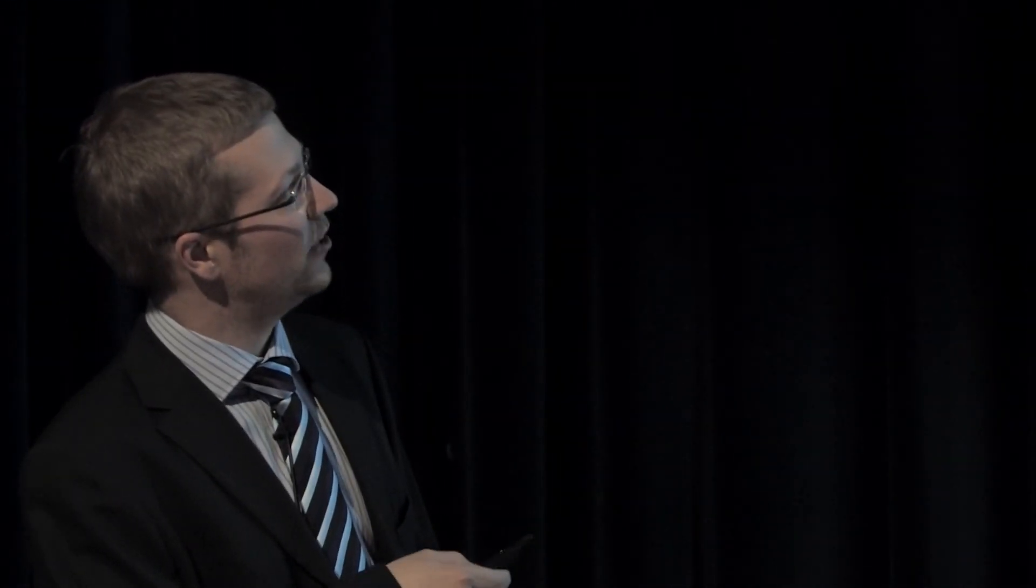To get an idea on how small the atoms really are, I have a comparison for you. The diameter of the earth is about 13,000 kilometers. The diameter of a good cup of espresso coffee is about 5 centimeters. The ratio between these two is about 300 million. If we go down in scale from the cup of coffee another factor of 300 million, we end up on the scale of atoms. The scale of sub nanometer - a tenth of a billionth of a meter is called Ångström and that's where the atoms lie.